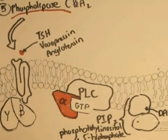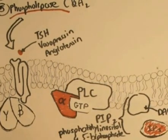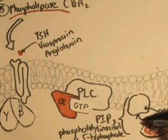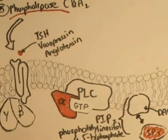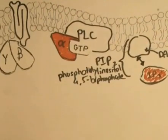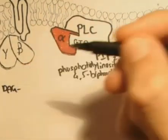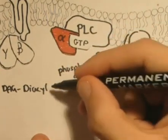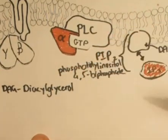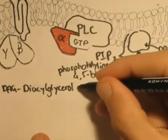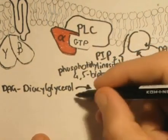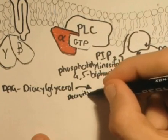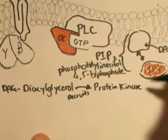The hydrolysis of PIP2 yields two products: DAG and IP3. DAG stays attached in the inner layer of the cell membrane due to its hydrophobic properties. DAG and IP3 act as separate messengers. DAG stands for diacylglycerol, and this second messenger recruits protein kinase C, or PKC.